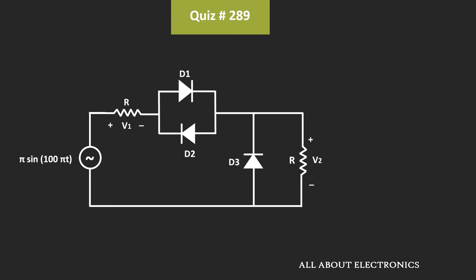Now let's see how this circuit behaves during the negative half cycle. During the negative half cycle, diodes D2 and D3 will be on, while diode D1 will be off. If we see the equivalent circuit, then it will look like this.